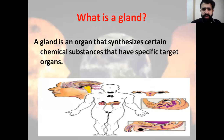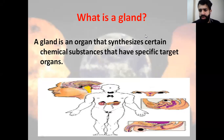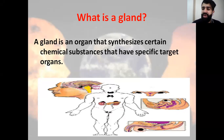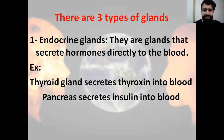So first of all, what is a gland? A gland is an organ that produces or synthesizes certain chemical substances. These chemical substances have a special target organ — they move toward a specific organ in order to work.